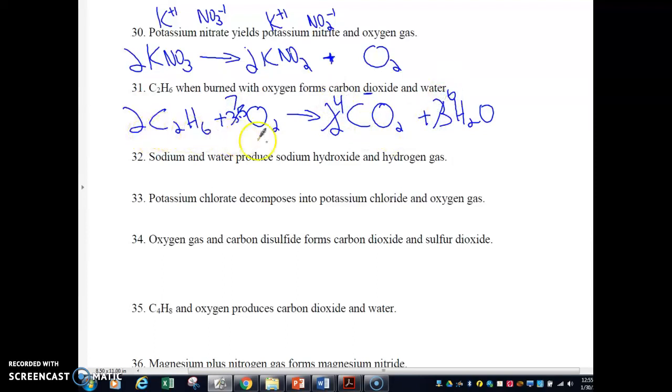If I double that by two, I have to double everything by two. So now what I get is four carbons and I have four carbons. Twelve hydrogens, twelve hydrogens. I have 14 oxygens - here's eight plus another six, giving me 14.